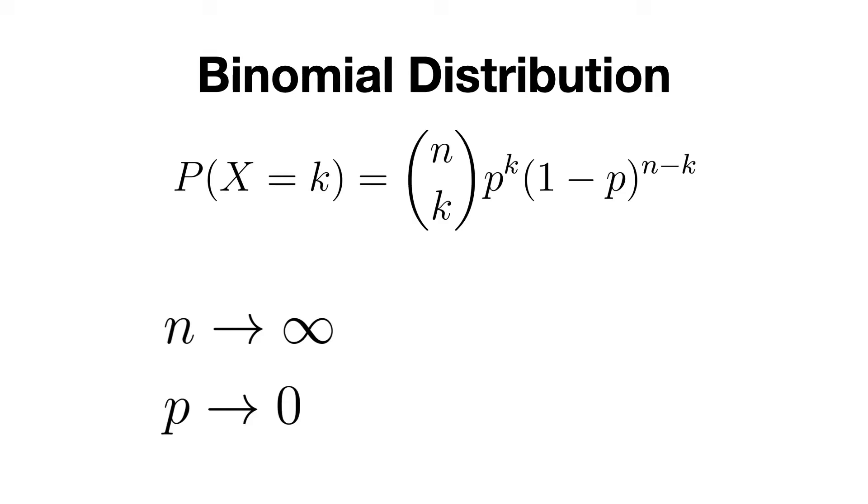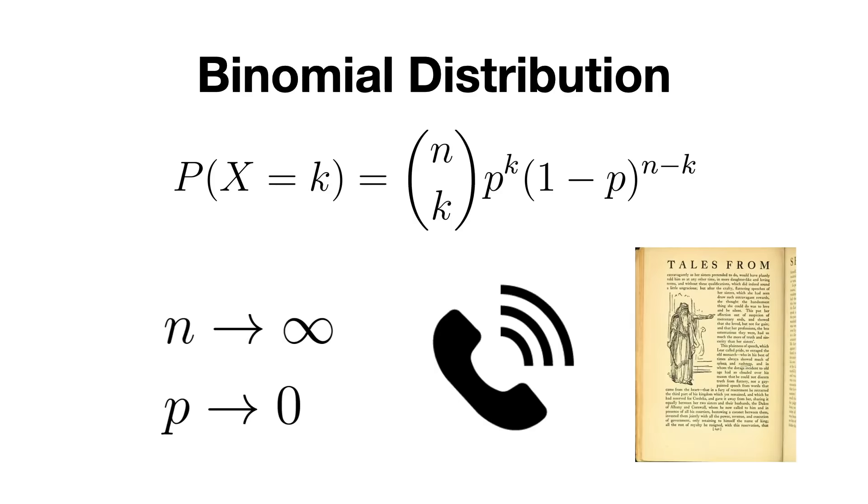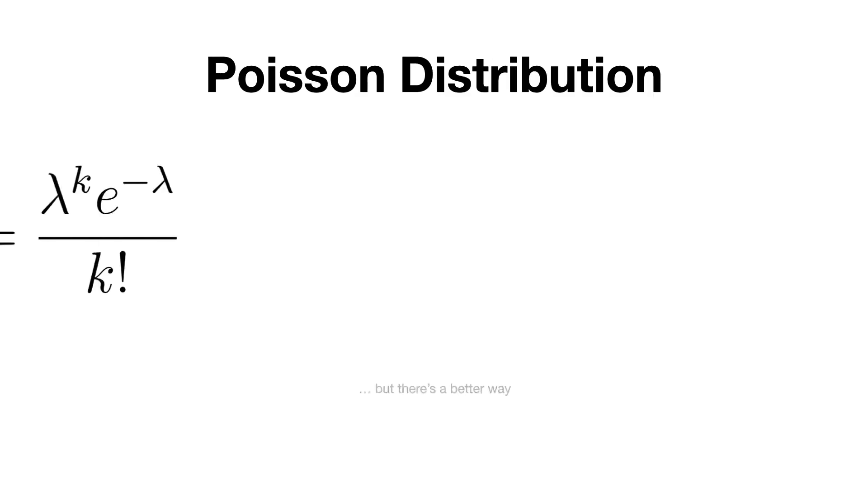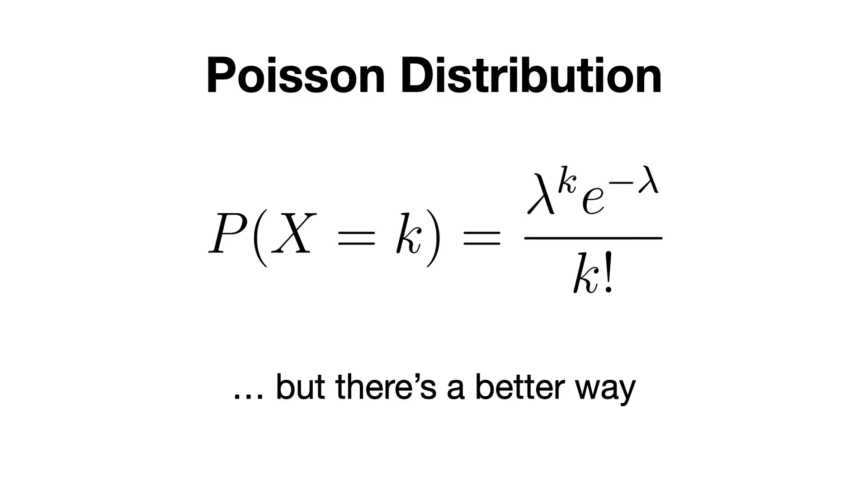For instance, imagine counting rare events like the number of phone calls arriving at a call center in a minute or the number of typos in a book. Each event is success but it's so rare that the probability of any one success p is small. However, if we have many trials, these rare events can still happen a few times. Now, you can still use the binomial distribution to calculate this probability, but there is an easier way of doing that which doesn't require raising p to a very large number, and probably you've guessed by now if you have clicked this video that this is the Poisson distribution, which basically approximates the binomial distribution in such extreme cases.